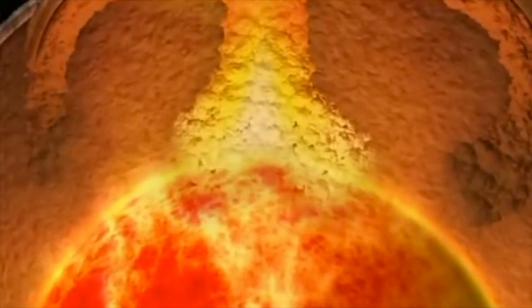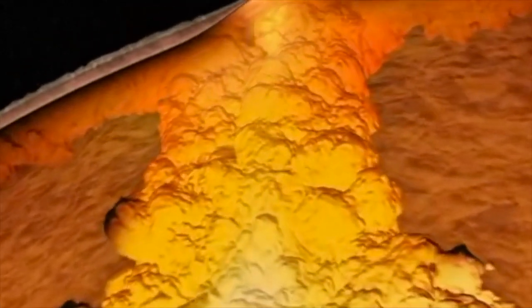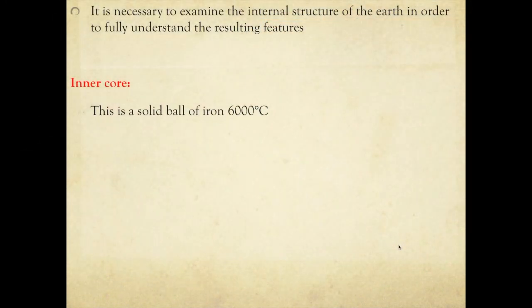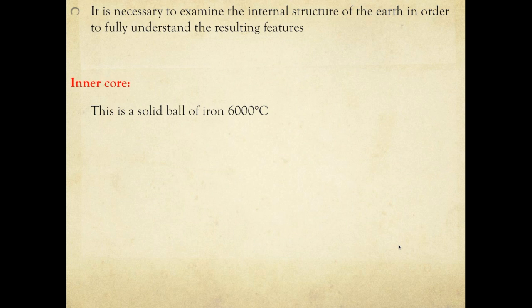The inner core is a solid ball of iron about 6,000 degrees Celsius. Why is it solid if it's that hot? Well it's solid because of the surrounding pressure. It's made up of two sections: a liquid outer core and a solid inner core, both consisting of nickel and iron. Each core is also extremely hot.